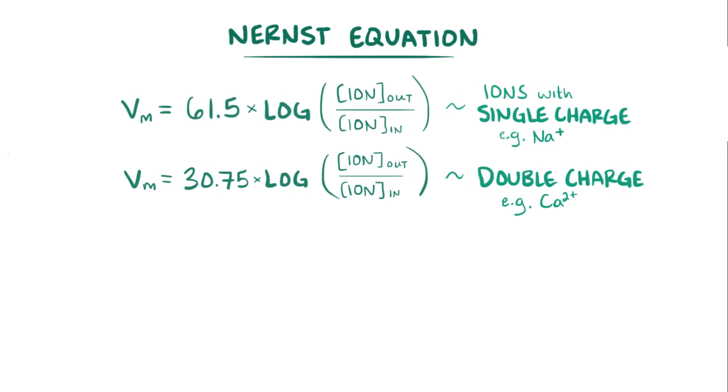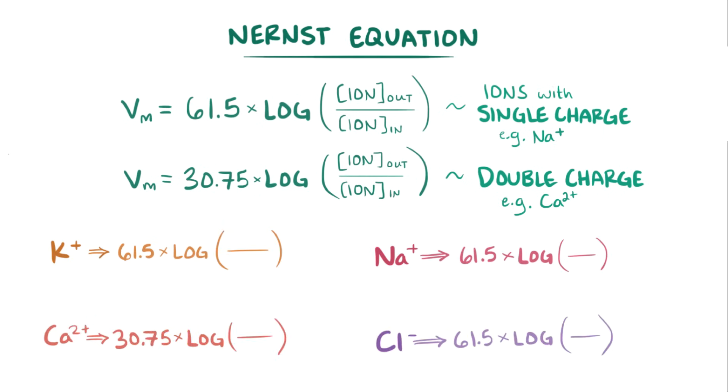For the four main ions that affect the cell's resting membrane potential, which are potassium, sodium, chloride, and calcium, the concentrations are 150 mmol per liter, 10 mmol per liter, 4 mmol per liter, and less than 1 micromole per liter on the inside of the cell, and 5 mmol per liter on the outside of the cell.